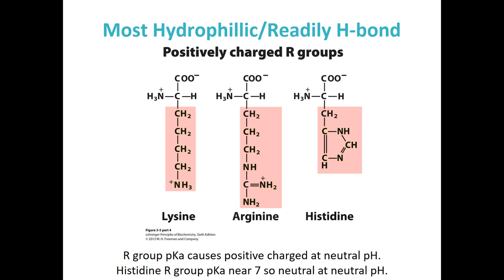Our most hydrophilic, readily hydrogen-bonding amino acids are our positively and negatively charged R groups. The positively charged R groups have an R group pKa — an extra ionizable group on the side chain — and they all have an amine. The amine in lysine and arginine is positively charged at neutral pH. Histidine is a little different — the pKa of its R group amine is near seven, actually around six, so at a pH of seven it will often not be charged. It's going to depend on what's around the histidine within the protein, and we'll see it frequently working in acid-base reactions inside enzymatic catalytic sites.